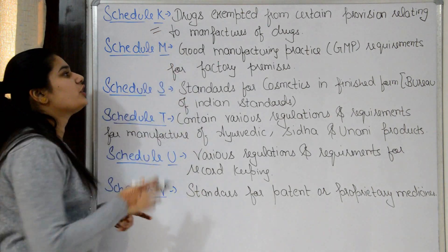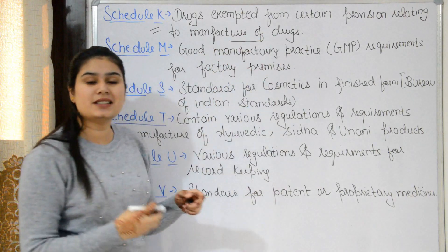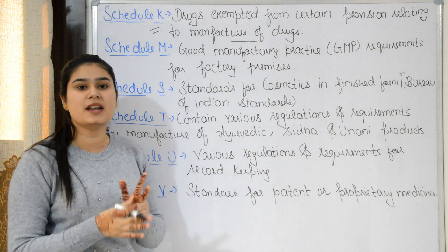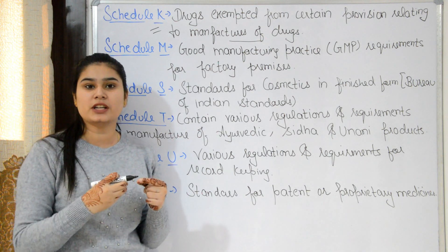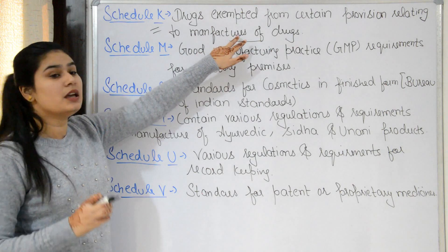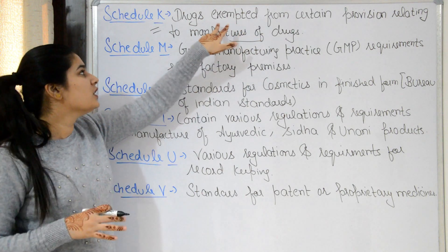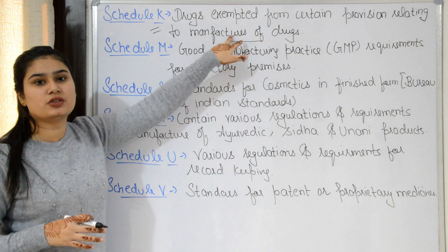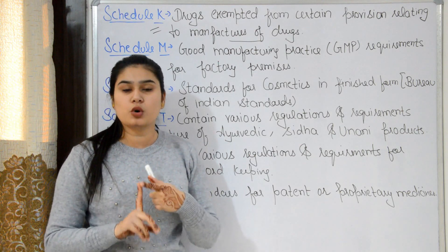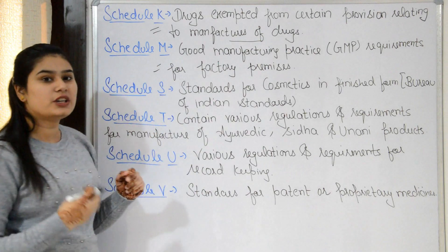Schedule K lists drugs exempted from certain provisions relating to the manufacture of drugs. Some drugs are free from manufacturing rules and regulations. These are easily available drugs like paracetamol, which are exempted from certain manufacturing provisions and come under Schedule K.